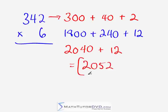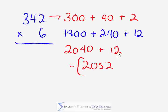The counting-up method of addition is extremely powerful. Once you get the hang of it, going right to left won't even make sense anymore unless you have to work on paper. To review: 3 times 6 is 1,800. Add 240 by counting up — 1,800, 1,900, 2,000, 2,040. Then add 12: 2,040, 2,050, 2,052.